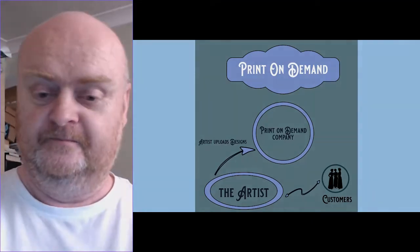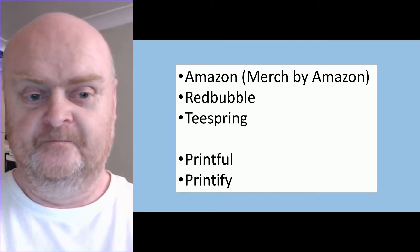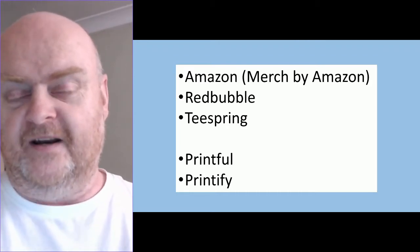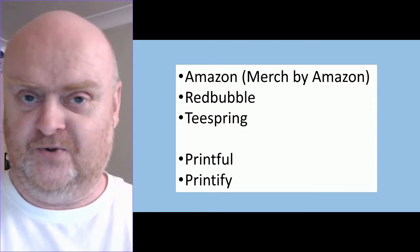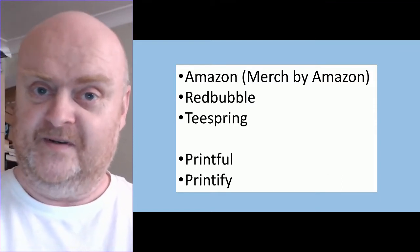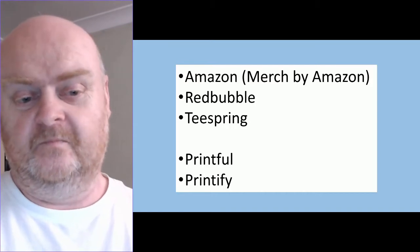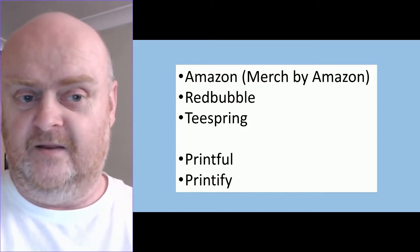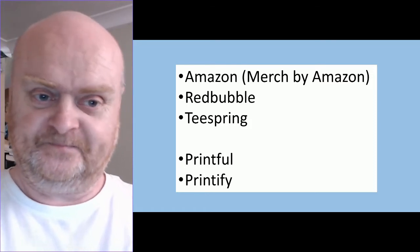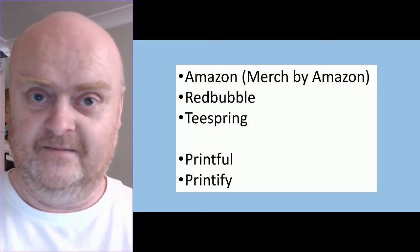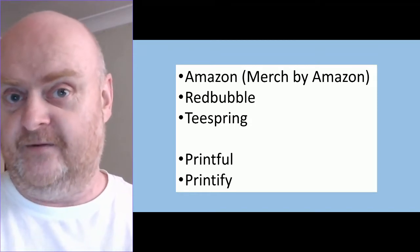There are about five large print on demand companies, divided into two groups. The top three use the first business model — the easier one. The last two use the second business model, which is basically drop shipping. The first group includes Amazon, specifically a branch called Merch by Amazon, as well as Redbubble and Teespring. Those three all use that first business model.